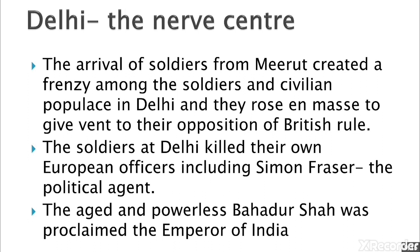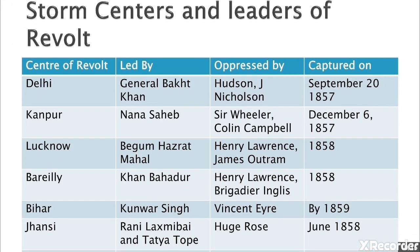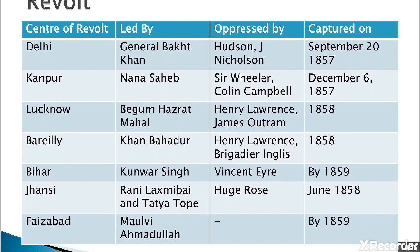The arrival of soldiers from Meerut created a frenzy among soldiers and civilian populace in Delhi, who rose en masse to show their opposition to British rule. The soldiers at Delhi killed their European officers, including Simon Fraser, the political agent. The aged and powerless Bahadur Shah Zafar, or Bahadur Shah II, was proclaimed the Emperor of India. After the capture of Delhi, the revolt spread to other major parts of India — specifically Kanpur, Lucknow, Bareilly, Bihar, Jhansi, and even Faizabad.